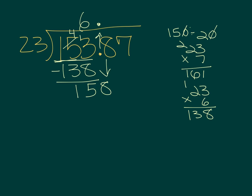Now I have 158 and luckily I already have some work off to the side that will help me to solve this. I know 23 times 7 was 161, which is too much, so I'm going to use a 6 again. 6 times 23 was 138. The remainder of 20. Bring down the 7.